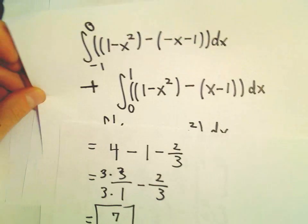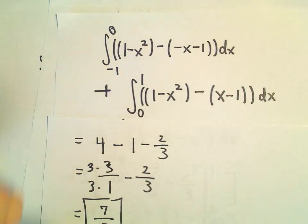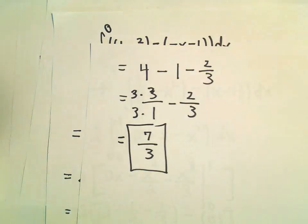Again, you could have certainly computed it this first way. And all that should have happened is when you add them together, at the end of the day, we'll get 7 thirds as our final answer.